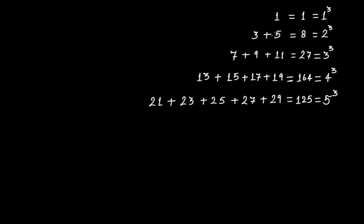Notice that one and three are both odd numbers, and five is also an odd number. So two cubed is expressed as three plus five — the addition of two consecutive odd numbers. The count of two consecutive odd numbers matches the number two.